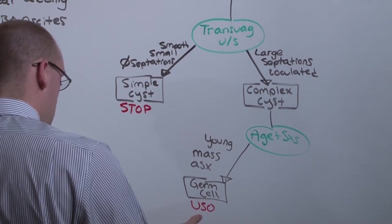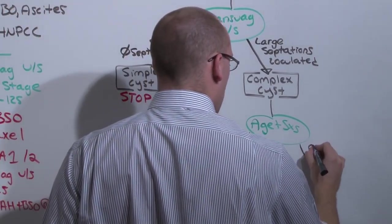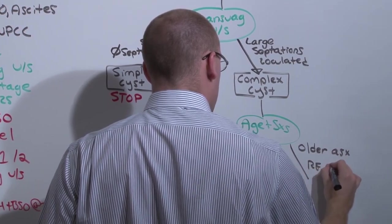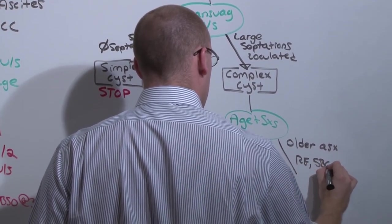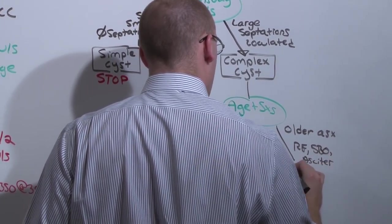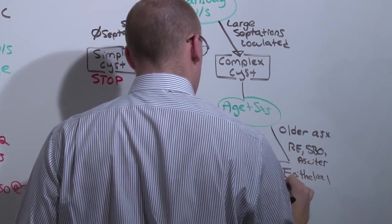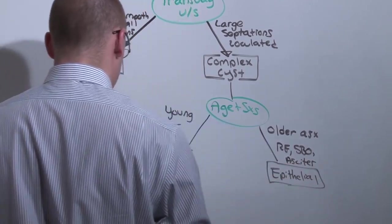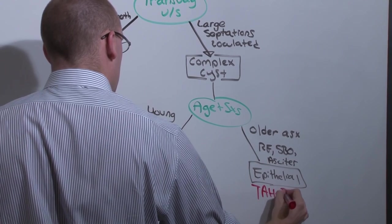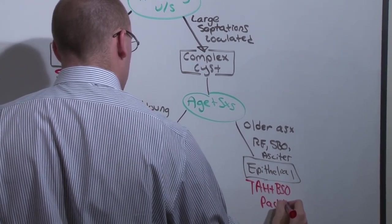On the other hand, if she's older and asymptomatic or there's bowel obstruction or ascites, you probably have that epithelial tumor where you need to be very aggressive. Total abdominal hysterectomy and bilateral salpingo-oophorectomy, generally with Paclitaxel chemotherapy.